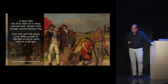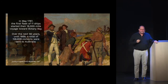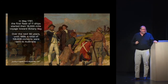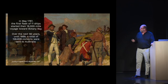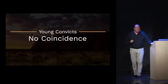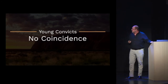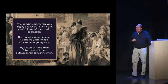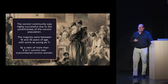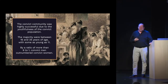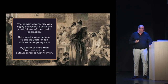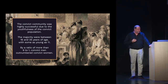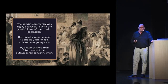Britain had ulterior motives. The convicts were mostly young — and this was not a coincidence. If you're going to start a successful new community in a foreign land, you don't send people in the last stages of life in their 40s and 50s. They sent the youngest people from the prison population — the majority were between the ages of 16 to 25, with some as young as 11. By a ratio of more than 6 to 1, men outnumbered convict women.